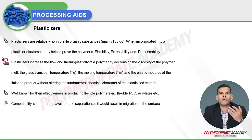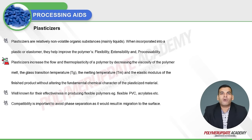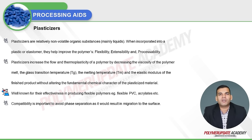If you add more plasticizers, the polymer will be processable at lower temperatures. Plasticizers also improve the elastic modulus of the finished product without altering the fundamental chemical characteristics of the plastics material. They are well known for their effectiveness in producing flexible polymers like flexible PVC out of rigid PVC, and acrylates as well, which are also known for their flexibility.